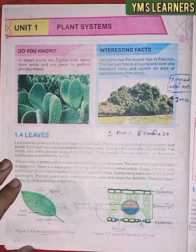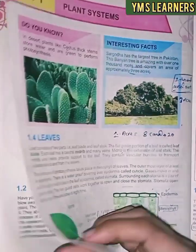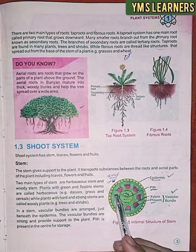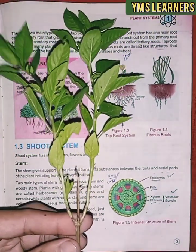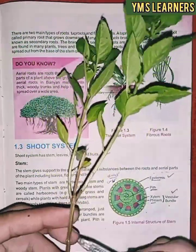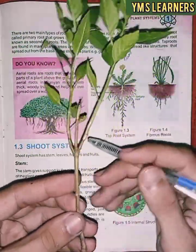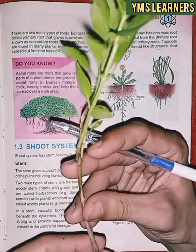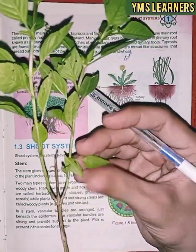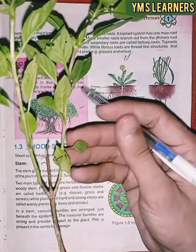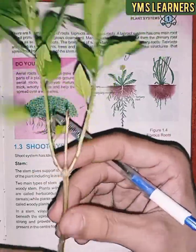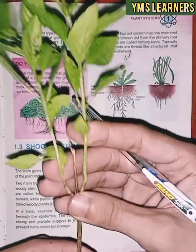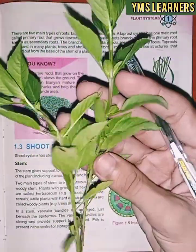The stem provides plant protection and support. The stem also performs conduction — transporting water and substances through the plant. If you use the plant's stem, it enables support and conduction functions.